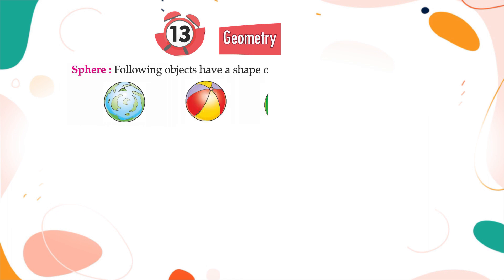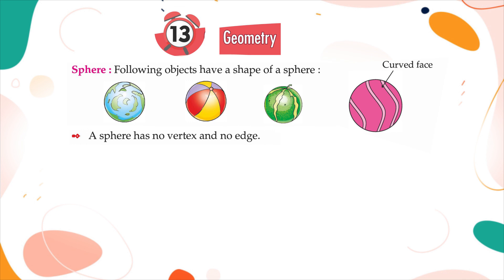Sphere: Following objects have a shape of a sphere. A sphere has no vertex and no edge. It has one curved face.